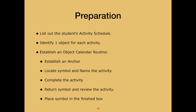When first beginning an object calendar system, it is critical to develop a routine for using the timepiece. I will provide an example here, but it may need to be altered slightly based on your student's individual needs. The first step is to list out the student's activities, then identify one object for each activity. Now for a sample routine: first, make sure the student has a clear understanding of when to check the calendar. Provide an anchor such as the phrase, 'let's check our calendar.' After the anchor phrase, go to the calendar and find the first symbol. If the student needs help, please remember to use the hand-under-hand technique to assist.